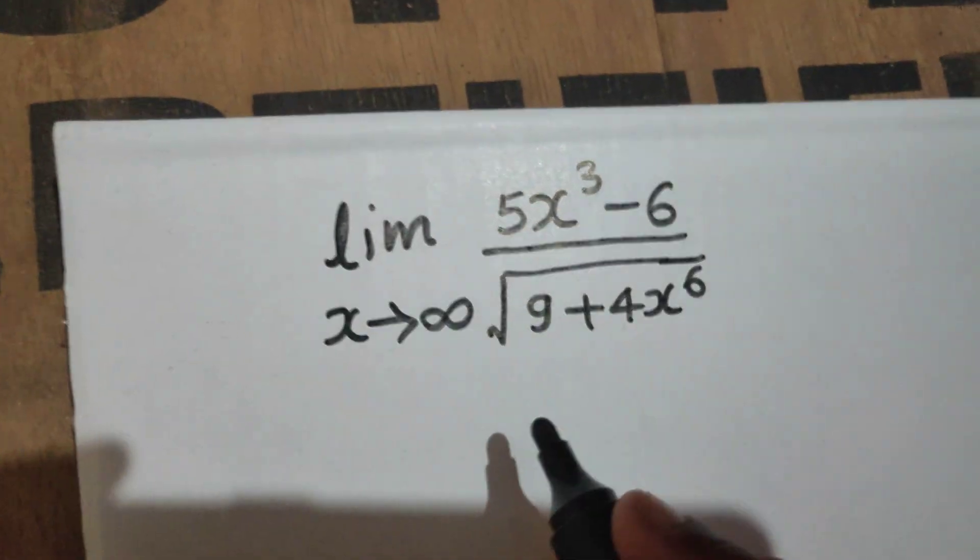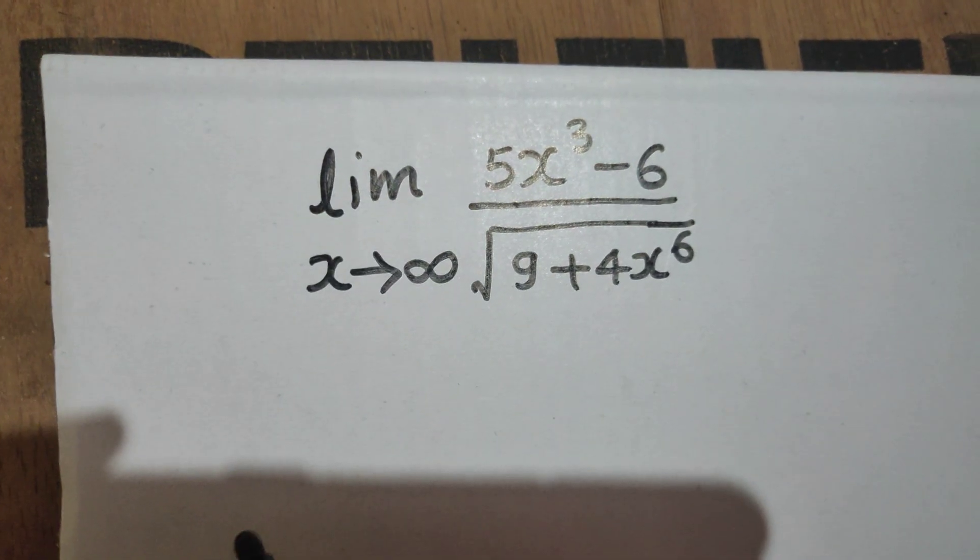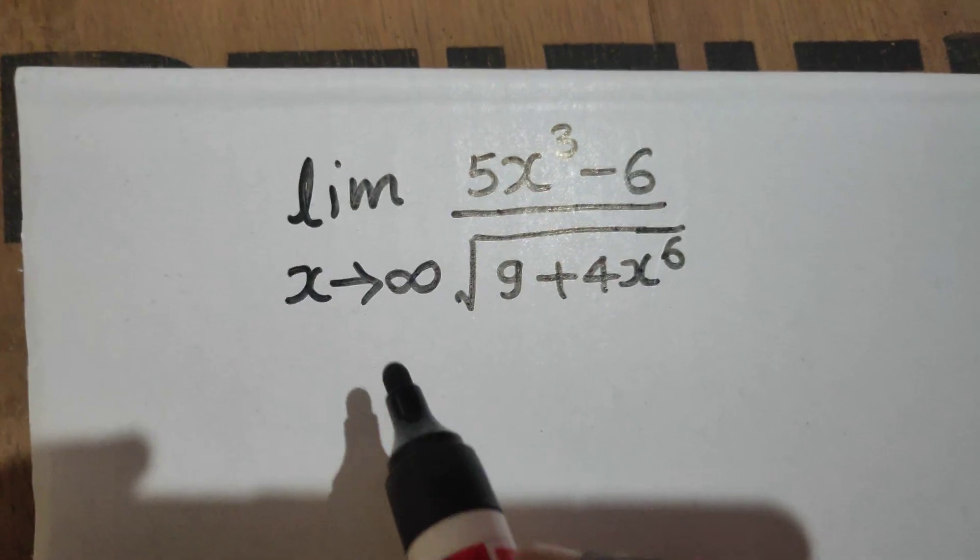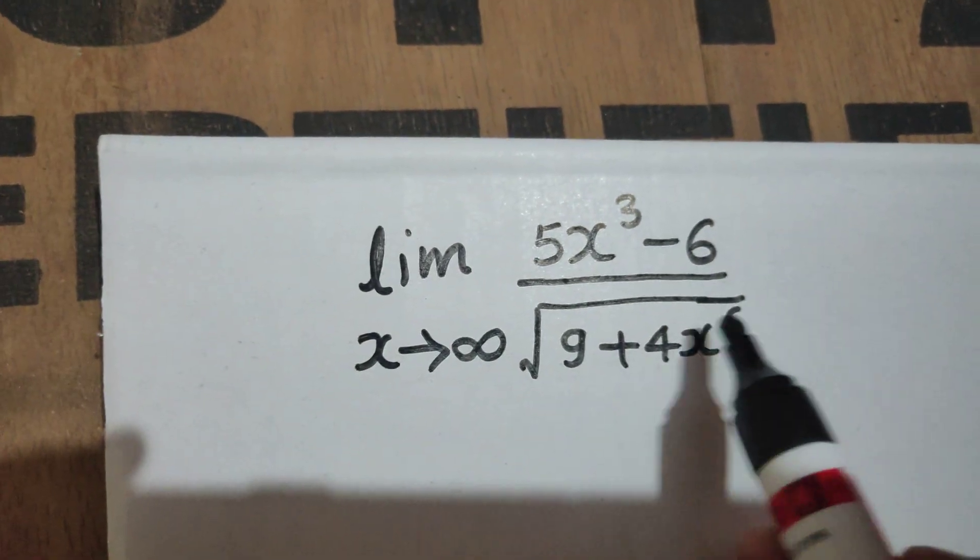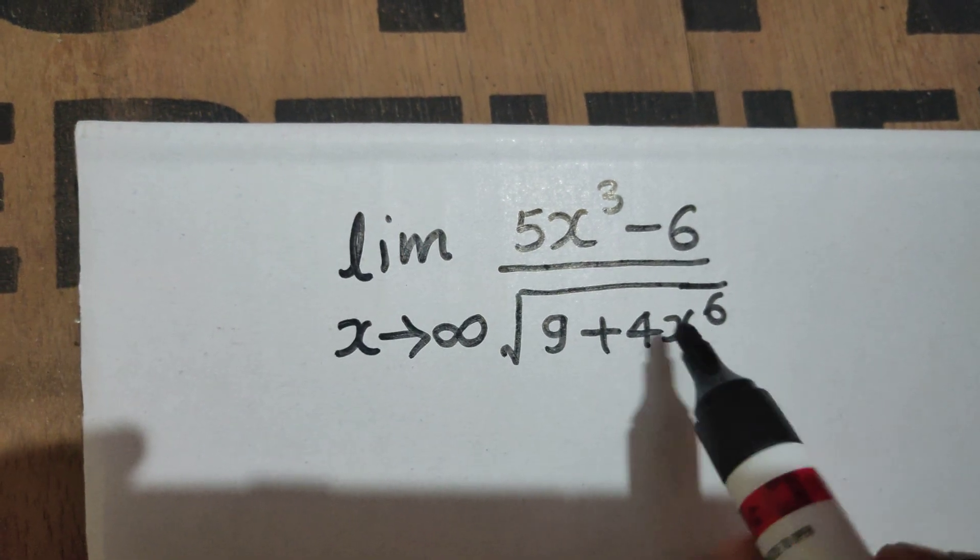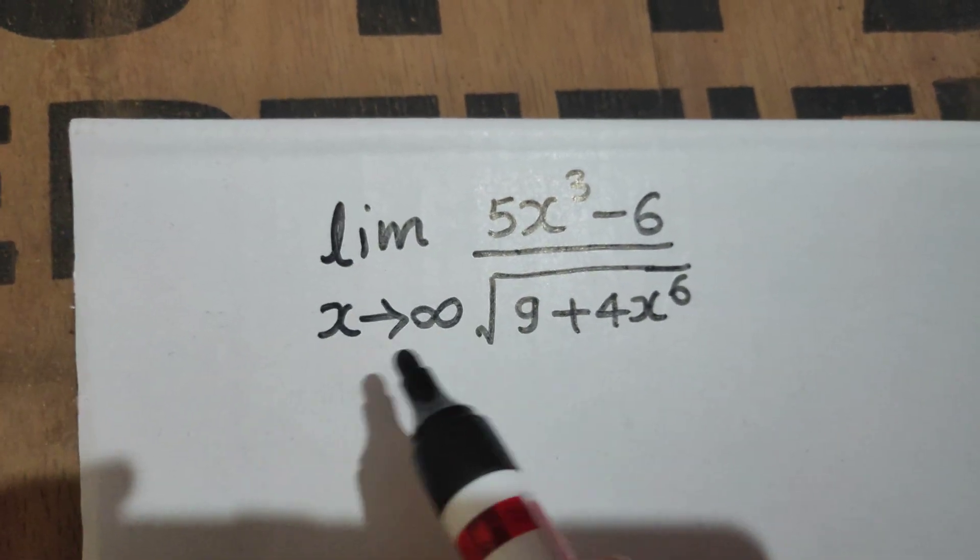Namaskar, Raj Krishna this side. Let's solve one more problem from limits. We have limit x tending to infinity: 5x³ - 6 divided by √(9 + 4x⁶). So whenever limit is x tending to infinity, we try to create 1/x, 1/x², 1/x³ and so on, because that becomes 0.